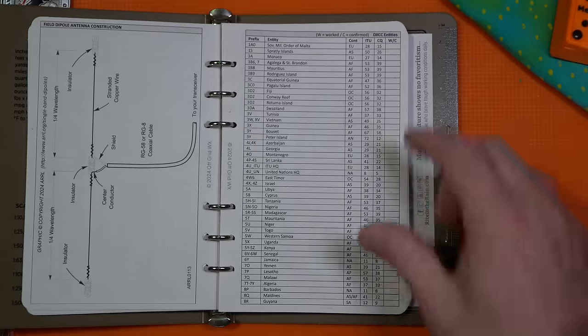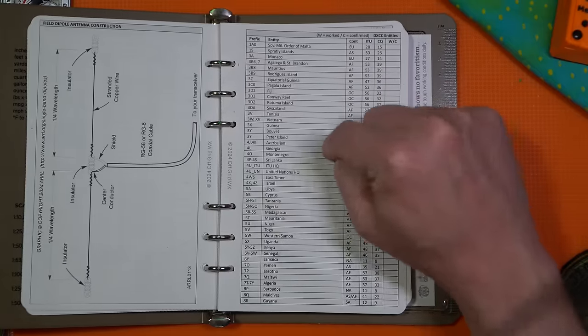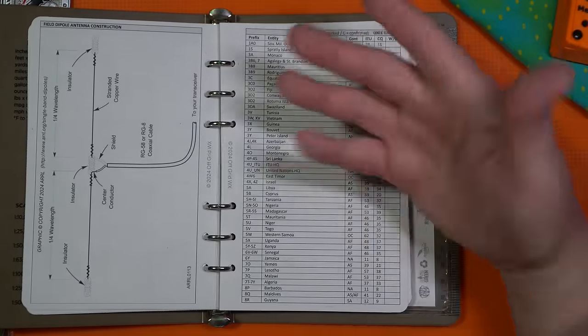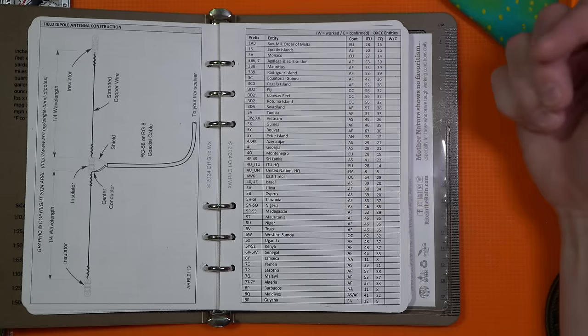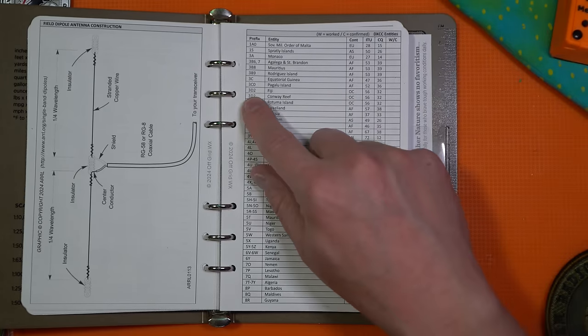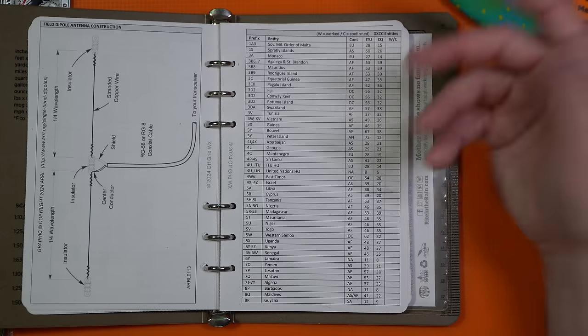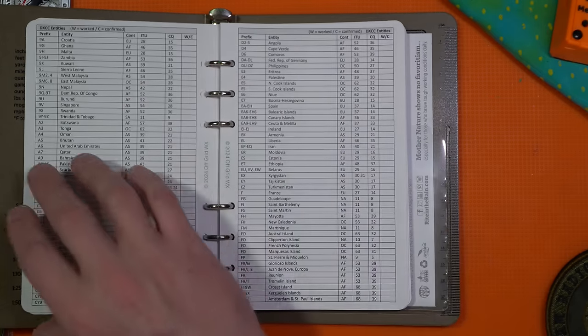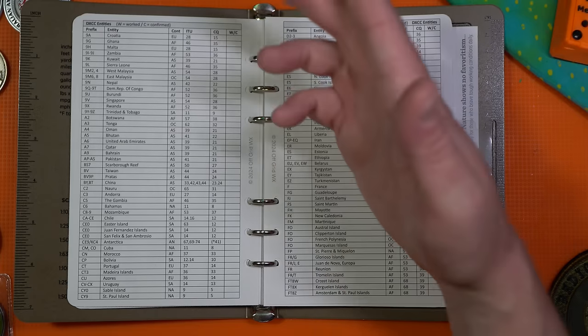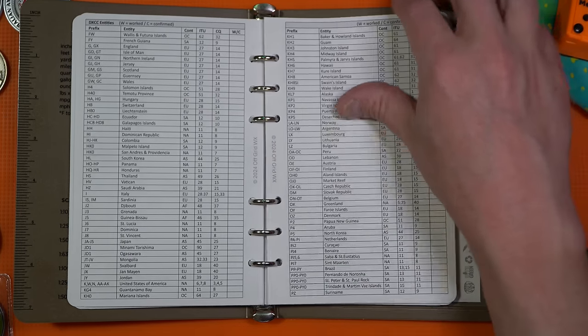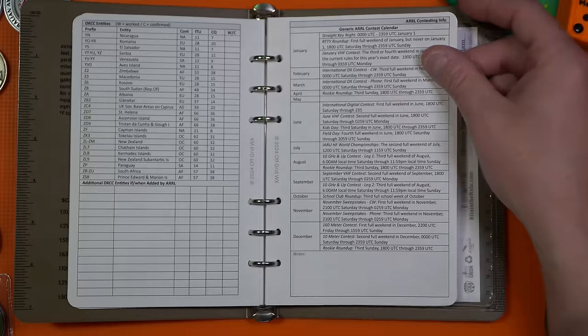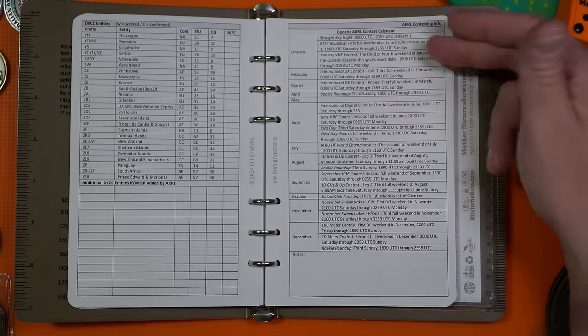Listings of DXCC entities. Also something that like, not necessarily something I need all the time, but if I'm out in the middle of nowhere off grid, or maybe I'm on a camping trip and I don't know who that was that I just made a contact with. Well, 3d2 is Fiji. Huh? Okay, cool. Now I know pretty cool. I guess it's a worked field too. Yeah. Worked versus confirmed. Yeah. So double check mark there got Croatia for instance, and it goes through the entire list of DXCC entities.